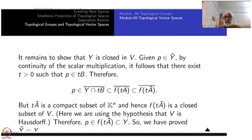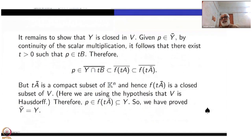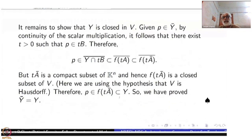Therefore p, which is inside f(tĀ), is inside Y — since f(K^n) = Y. There is no need to take the closure. So p is inside Y, which means Ȳ ⊆ Y, and therefore Ȳ = Y. The closure property follows from the Heine-Borel theorem that closed bounded subsets of K^n are compact.